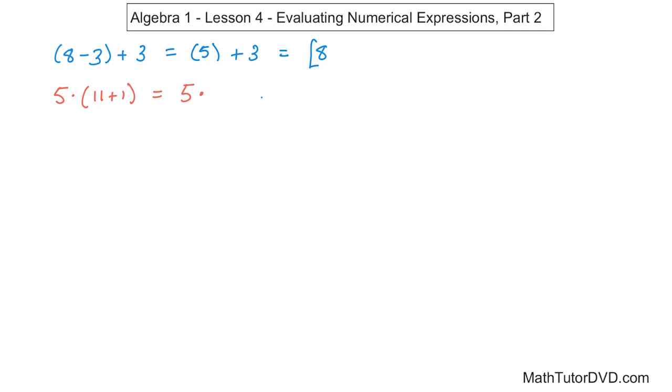You leave the 5 on the outside, just leave it alone. And inside the parentheses, 11 plus 1 is 12. And now that you've done that, you can mentally drop the parentheses. 5 times 12 is going to be equal to 60. And that's going to be the final answer to evaluate that numerical expression.